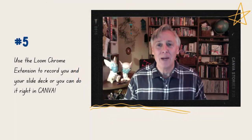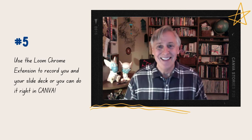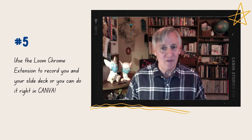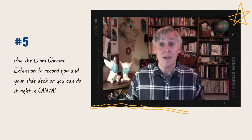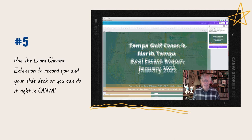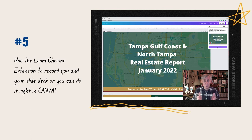One more thing before we wrap up — step number five in creating your market update video was to actually record your video. Jan always uses Loom, a Google Chrome extension. It's a fantastic tool and really works out great. However, you can do the recording right in Canva if you'd like. All you need to do is go up to the top menu, click the dot-dot-dot, go to 'Present and Record,' then go right to the recording studio. You'll be able to check your camera and microphone levels, then go ahead and record your video. One-stop shop for getting your video designed and your template ready and recording — all in Canva.